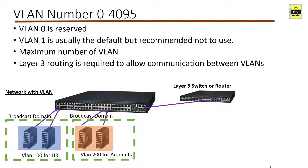An important point is that VLANs are a Layer 2 protocol. If a device in VLAN 100 wants to talk to a device in VLAN 200, then Layer 3 routing is required to allow communication between VLANs — either a Layer 3 switch or a router to route the traffic between those two different VLANs.